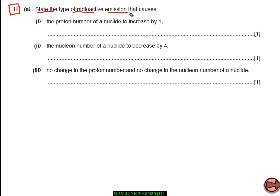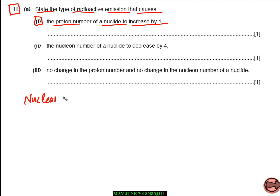Question number 11 part A is asking us to state the type of radioactive emission that causes the proton number of a nucleus to decrease by one. So we need to understand how many types of nuclear radiations there are.